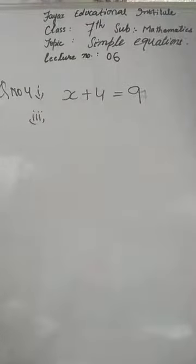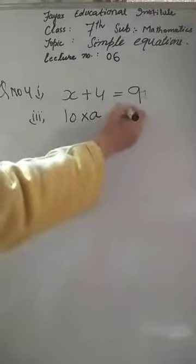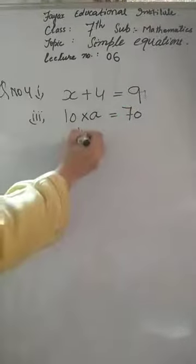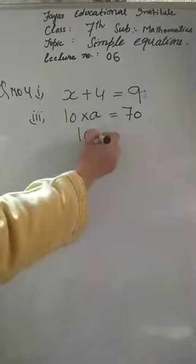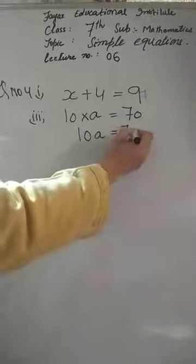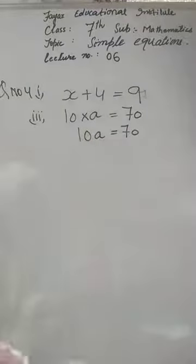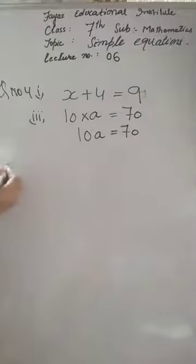So that becomes x plus 4 equal to 9 — we changed the statement into an equation. Now see the third part: 10 times a — 10 into a. 'Is 70' means is equal to 70. So this becomes 10a is equal to 70. We have changed the statement into an equation.